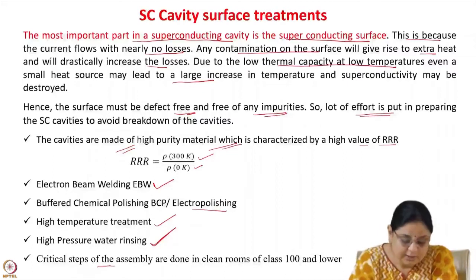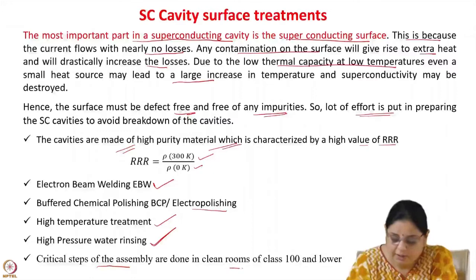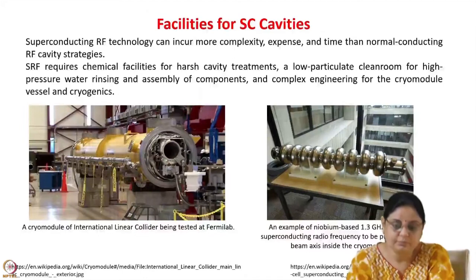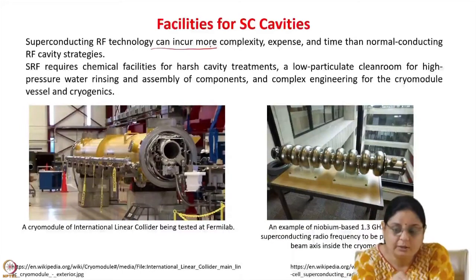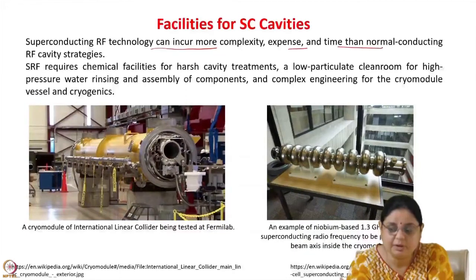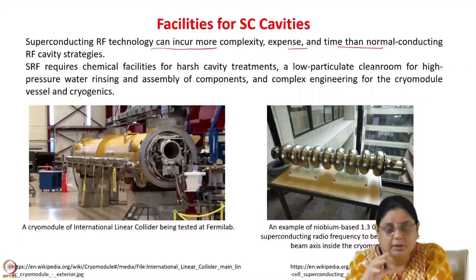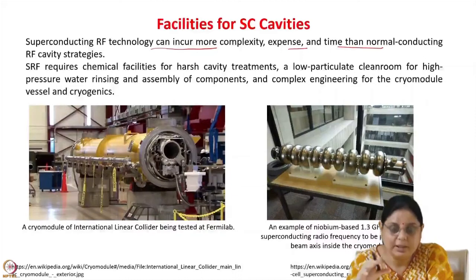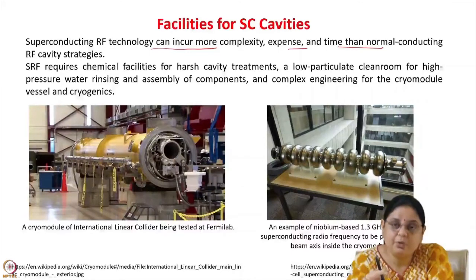The critical steps of assembling the cavity are done in clean rooms of class 100 and lower. A lot of infrastructure is required for building superconducting cavities. Superconducting RF technology incurs more complexity, expense, and time than normal conducting cavities. A normal conducting copper cavity can be made in a normal workshop with normal cleaning processes, requiring no additional infrastructure like a clean room. Whereas superconducting cavities require significant infrastructure for fabrication and assembly.